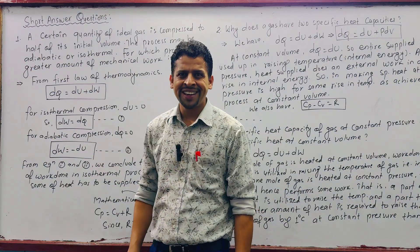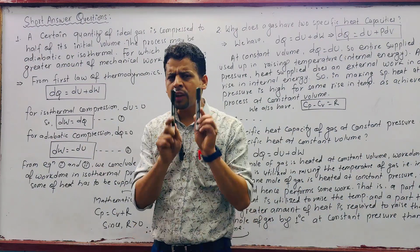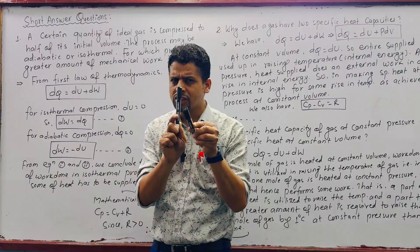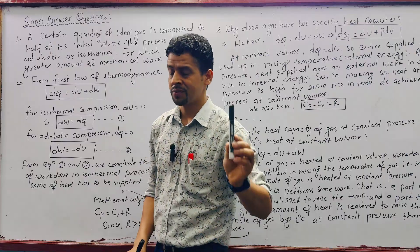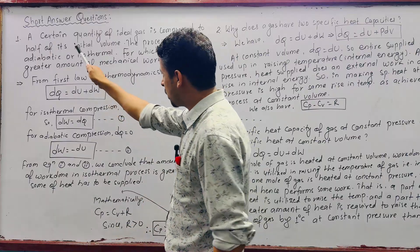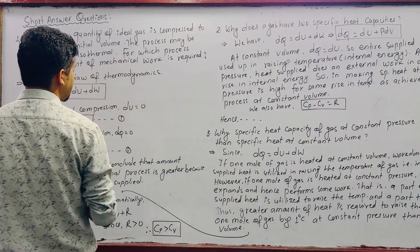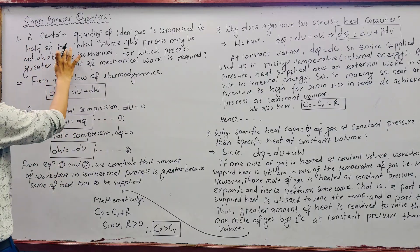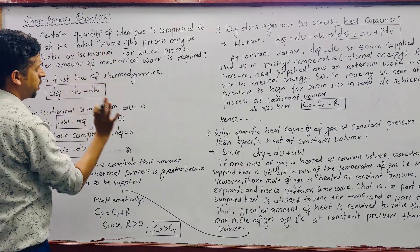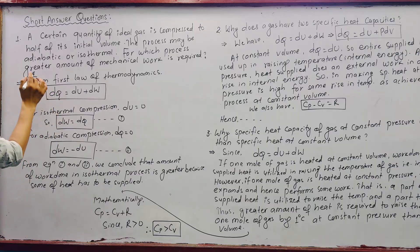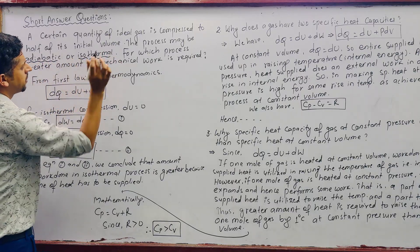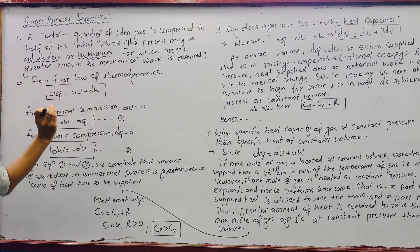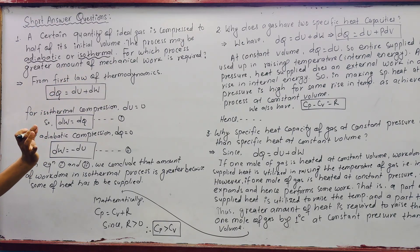Thermodynamics most important short answer questions discussed today. Question 1: A certain quantity of ideal gas is compressed to half of its initial volume. The process may be isothermal or adiabatic. For which process is a greater amount of mechanical work required?